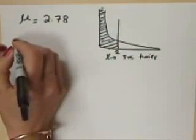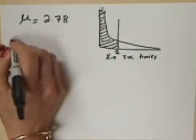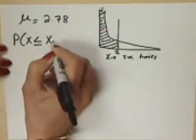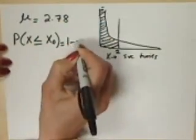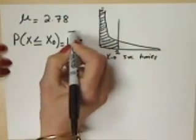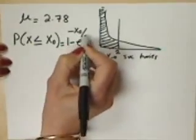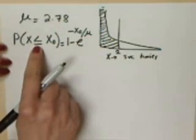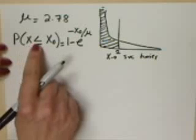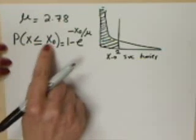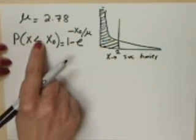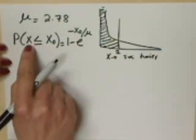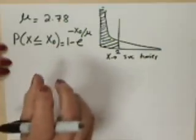The cumulative density function for the exponential distribution is given as probability that x is less than or equal to x0 equals 1 minus e raised to the power of negative x0 divided by mu, where mu is the average service time. Keep in mind that whether I say x less than x0 or x less than or equal to x0, my answer would be the same because the probability that x would be exactly x0 equals 0.